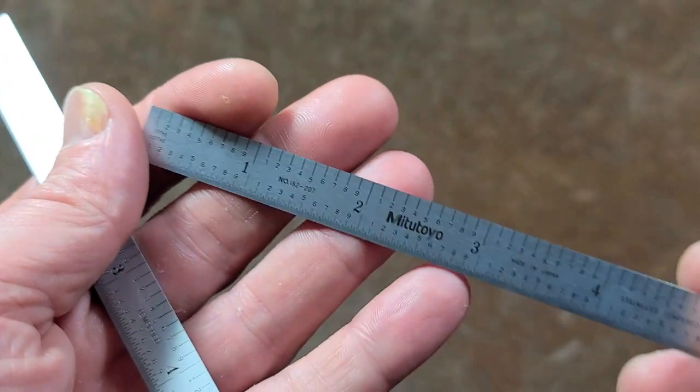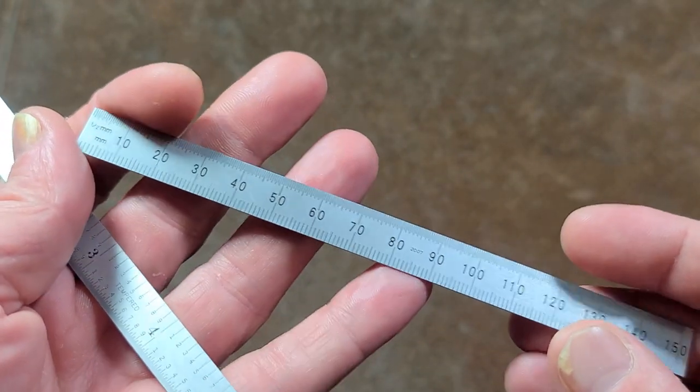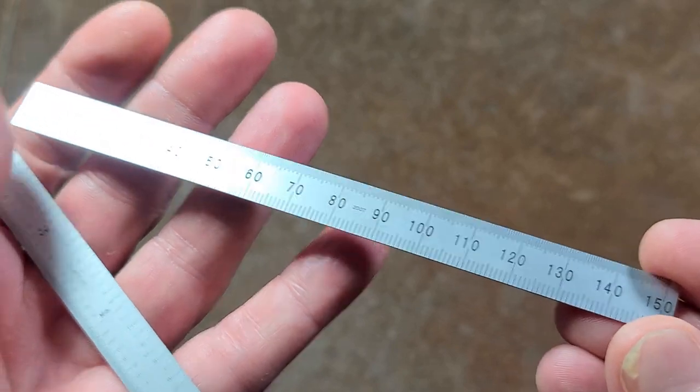It does tenths and one-hundredths on one side, and it's designed to flip over easily. Then it's of course metric, 15 centimeters or 150 millimeters.